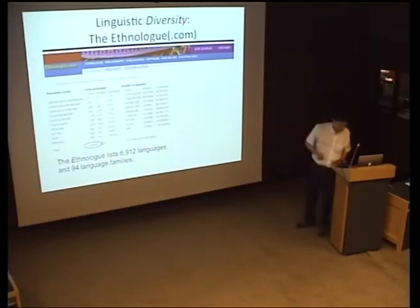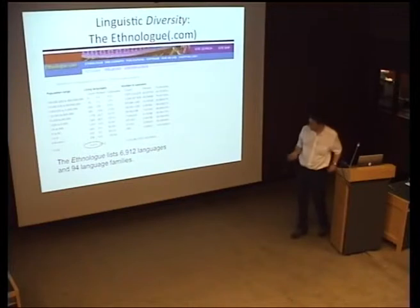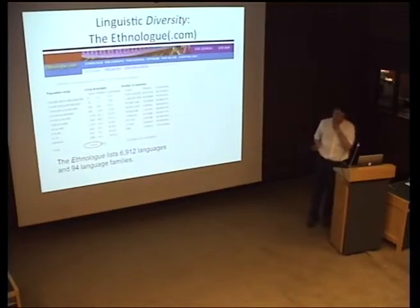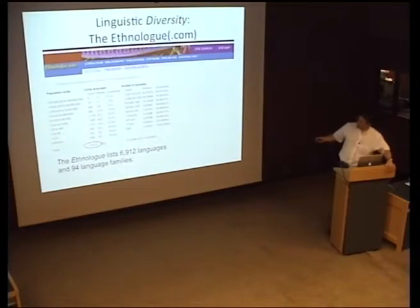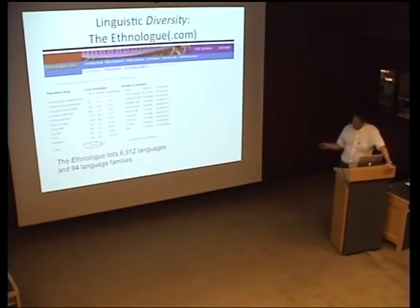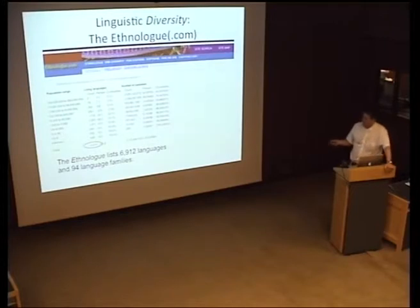If you go to the Ethnologue website, you'll find out some information like there are about 7,000 languages. But for the purpose of this talk, what is important are the first two columns. The first column shows the number of speakers of a given language. For example, we find out that between one and nine speakers, there are about 200 languages.